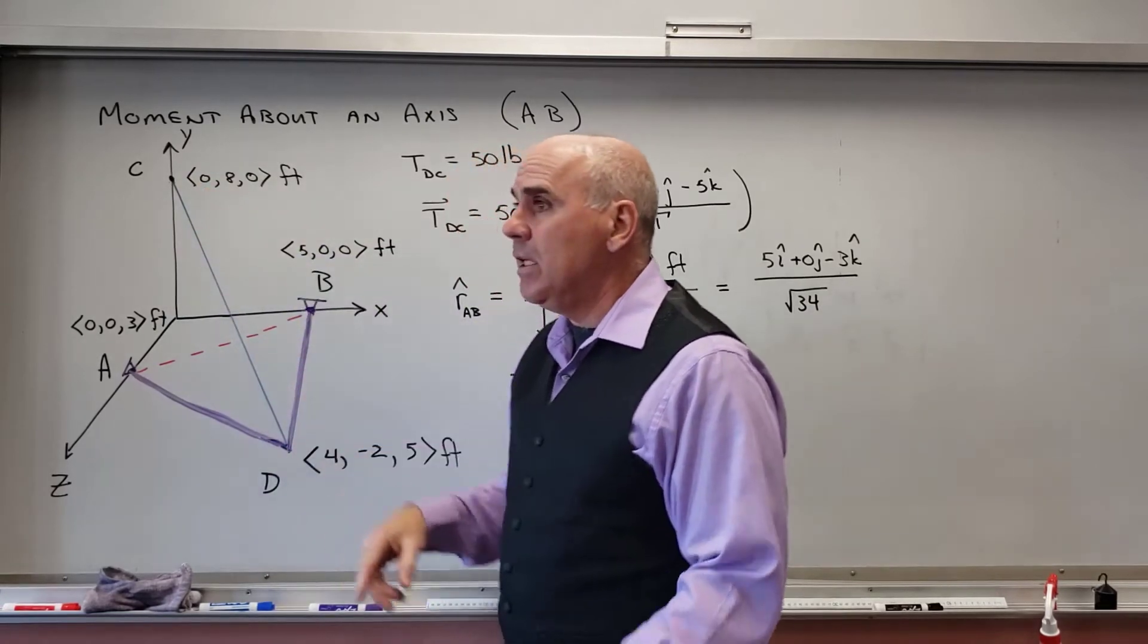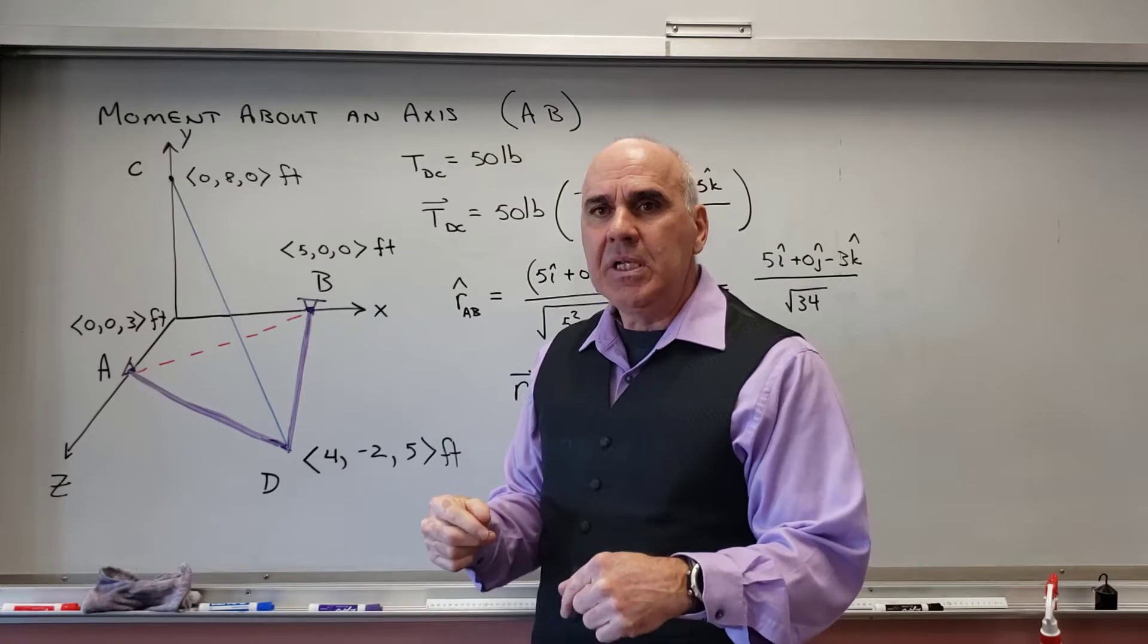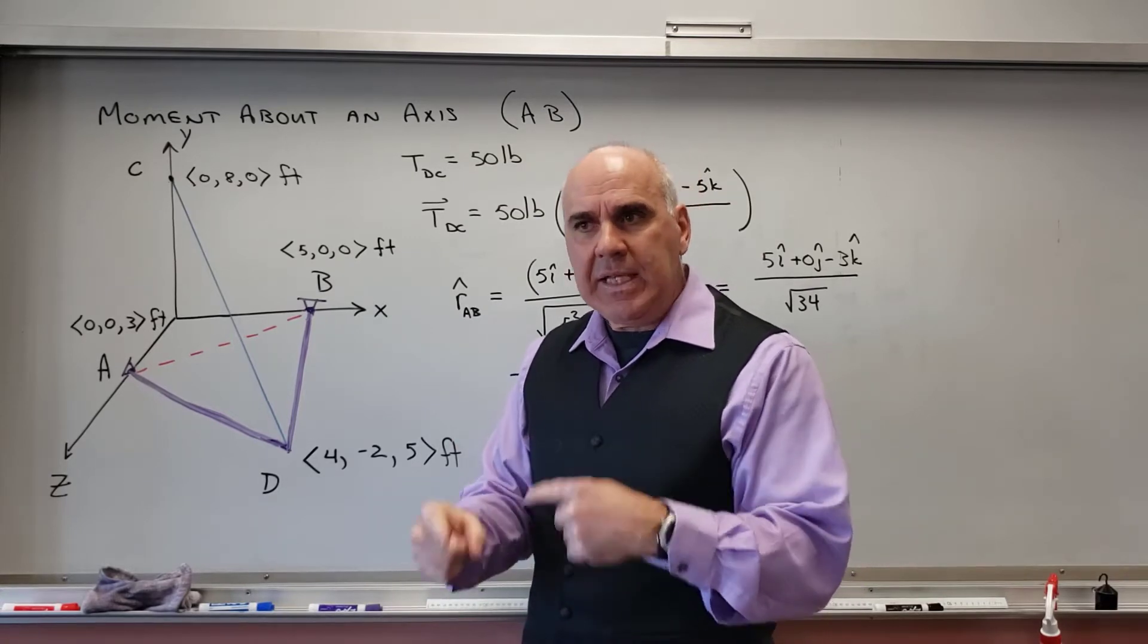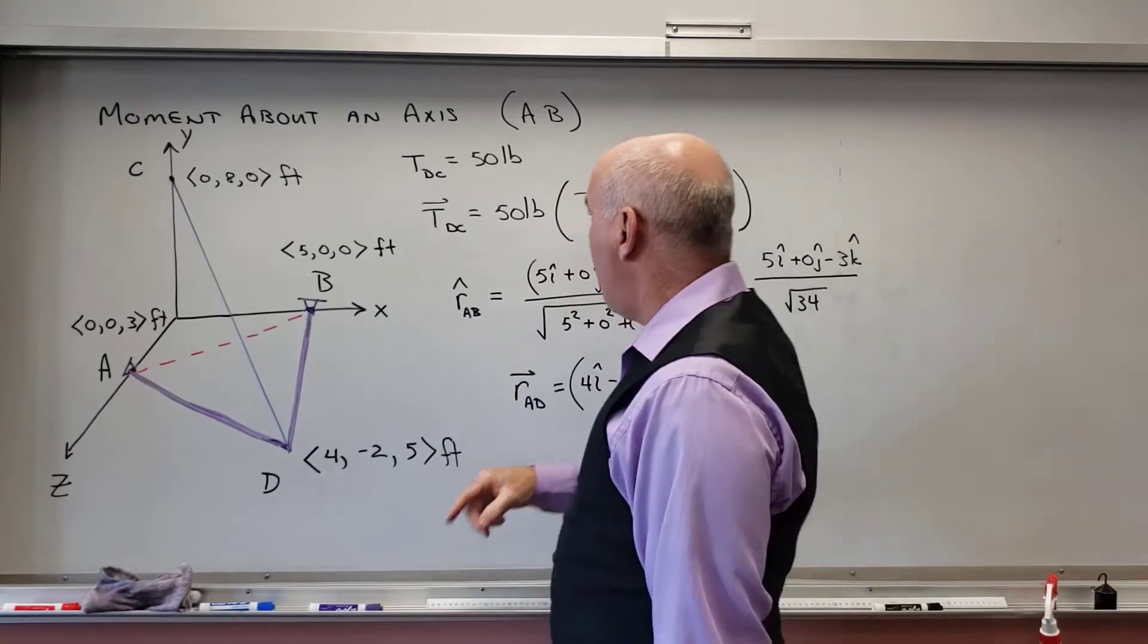From D to C. And so that means take the position of C minus the position of D, and then divide that by the magnitude of that vector length.